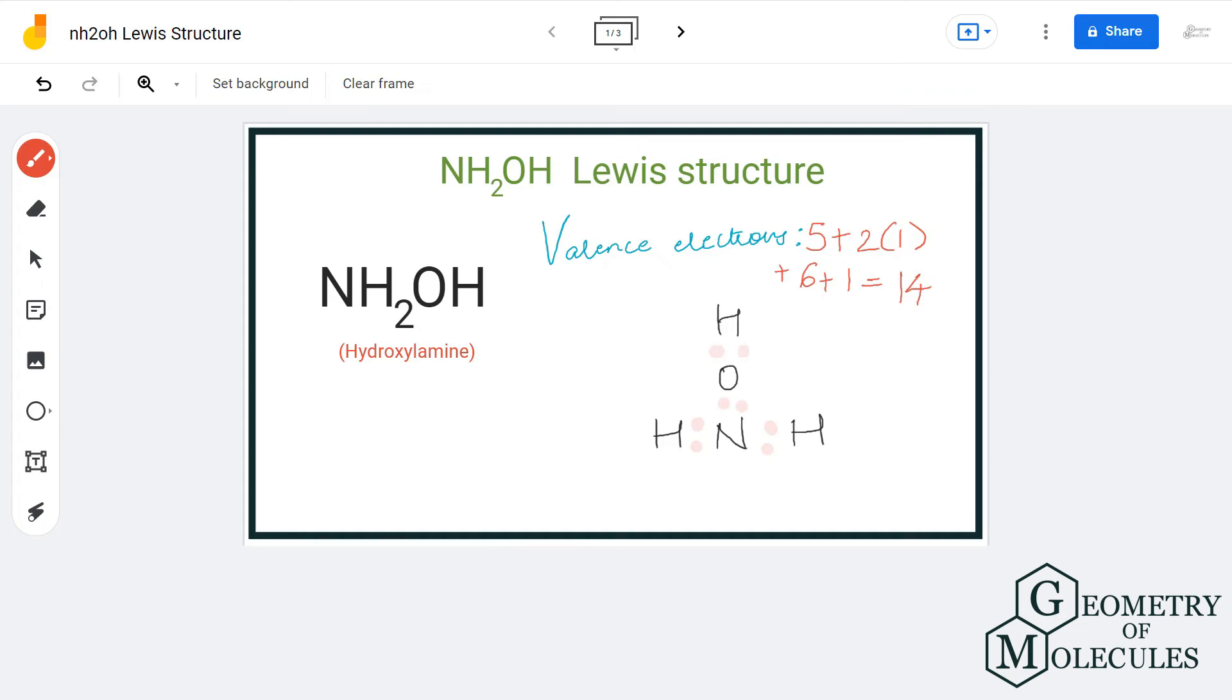So now, after doing this, hydrogen atoms already have a complete outer shell and we can place four valence electrons around oxygen atom and two valence electrons around nitrogen atom. And that way we will be using up all our 14 valence electrons.